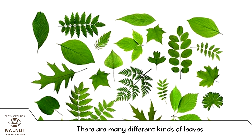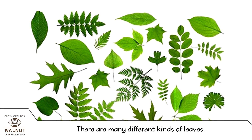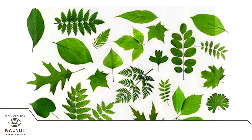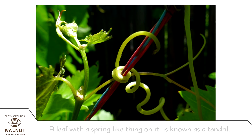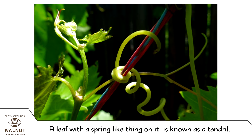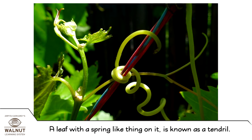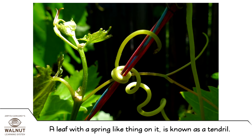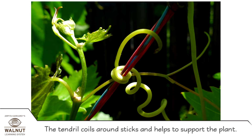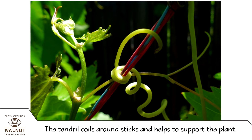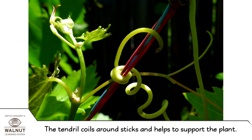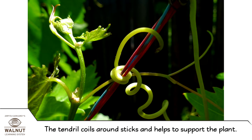There are many different kinds of leaves. A leaf with a spring-like thing on it is known as a tendril. The tendril coils around sticks and helps to support the plant.